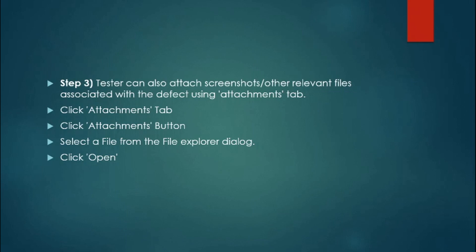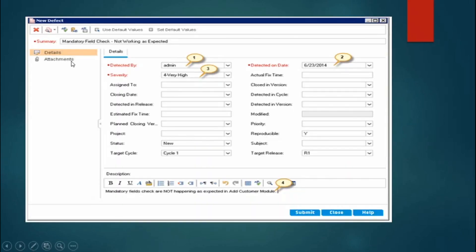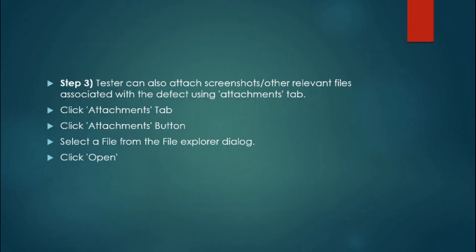Testers can also attach a screenshot or other relevant files associated with the defect using the attachment tab. In the attachment tab, we generally attach evidence. When executing a test case, take screenshots of all screens, highlight the section where the issue is found, save the document, and attach it to the defect so the developer can clearly understand in which screen and section the issue was found.